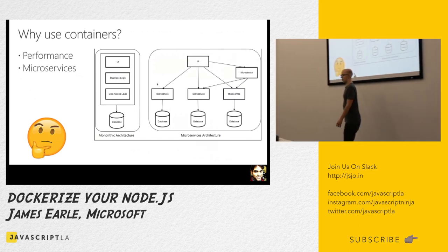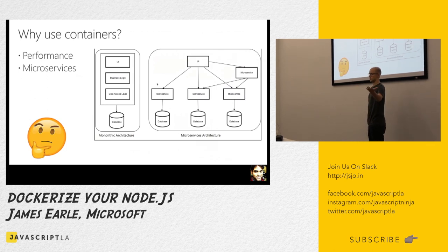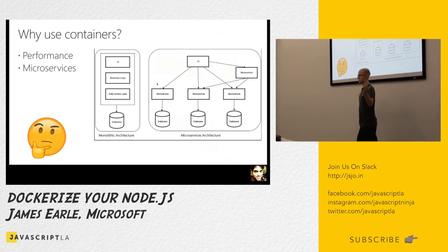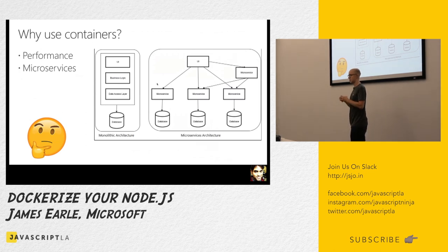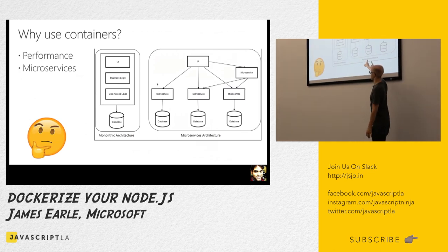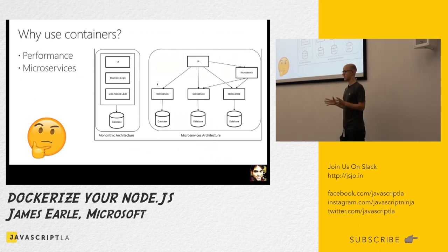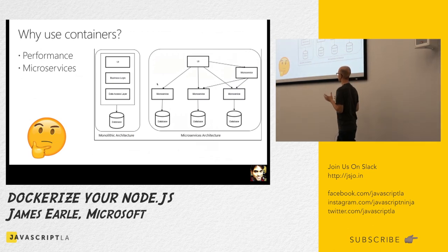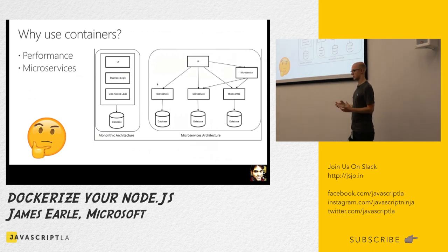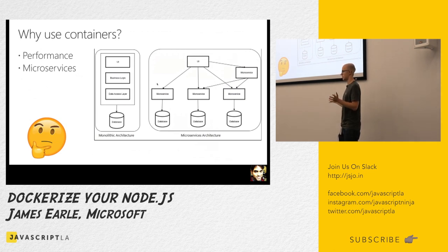Going back to the monolithic architecture: what happens when something breaks? It all breaks — everything is completely knit together. By using microservices architecture and containers, we can have a little more durability and a little less rigidness. It's not like a big stick that just breaks — it's like a bunch of branches; the stick is still okay.